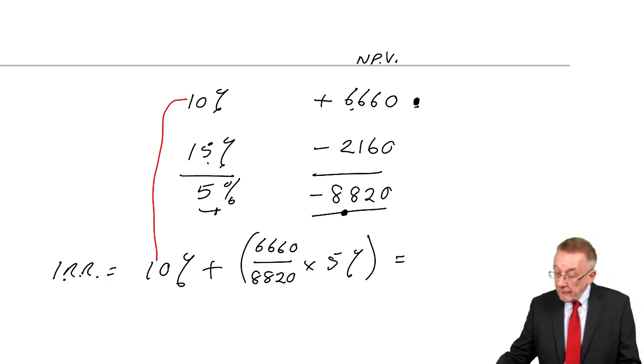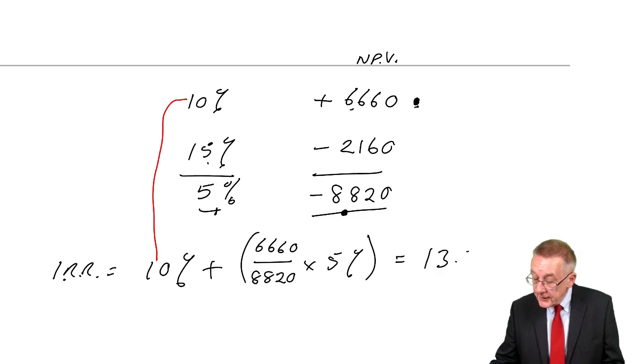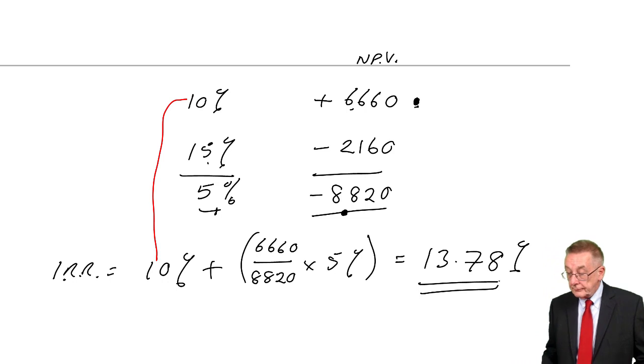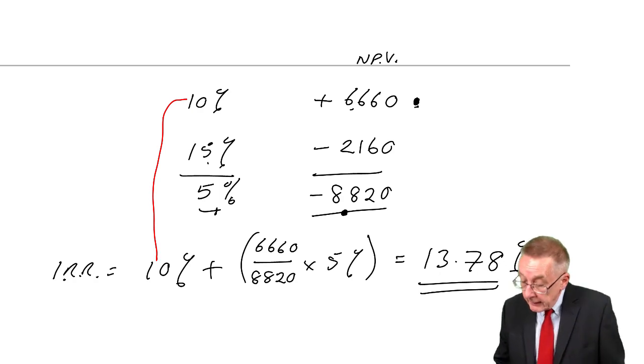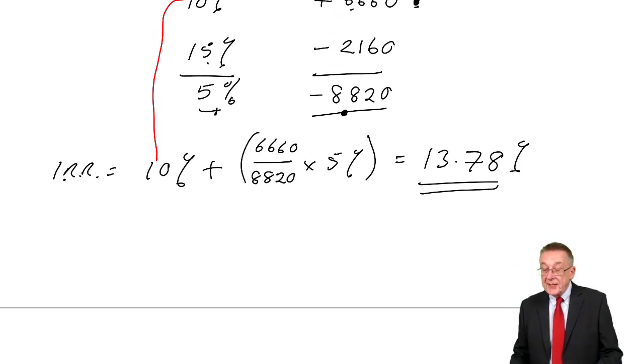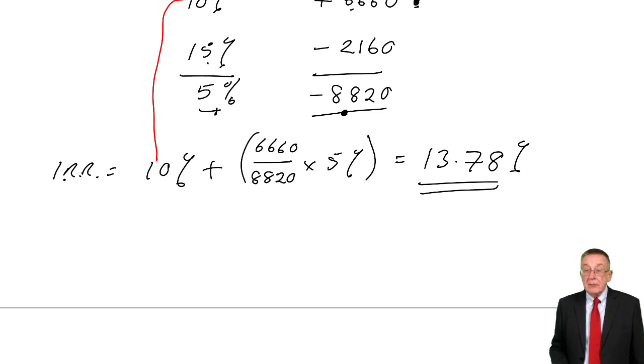8,820 is equivalent to a change of five percent. We want a change of 6,660 to get to zero. It'll be six eighths of five percent, which comes to 6,660 divided by 8,820 times five plus 10, 13.78 percent. Now, arithmetically, that's it. Two guesses, approximate between them.